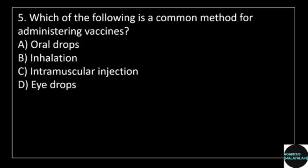5th question: Which of the following is a common method for administering vaccines? Answer options: option A, oral drops; option B, inhalation; option C, intramuscular injection; option D, eye drops.